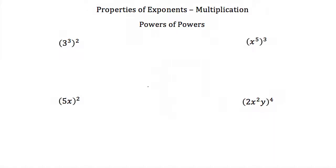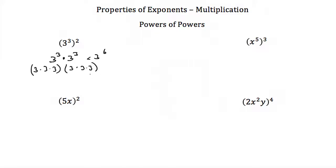Now we need to talk about what happens when we have powers of powers. Here we have 3 to the third, and then squared again. This means 3 to the third times 3 to the third, which is 3 multiplied by itself 6 times, giving us 3 to the sixth. Whenever you have a power to a power, you multiply your exponents: 3 to the 3 times 2, or 3 to the sixth.